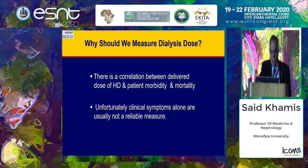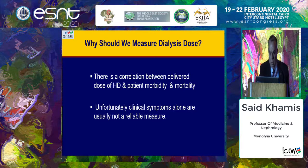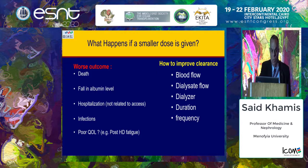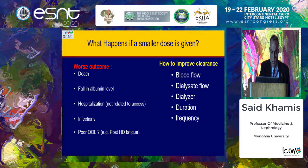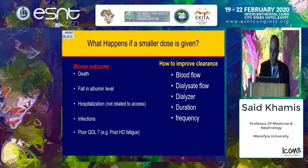Why should we measure the dialysis dose? There is evidence-based correlation between the delivered dose of hemodialysis and patient morbidity and mortality. But clinical symptoms and lab results alone are usually not a reliable measure. If a smaller dose is given, we face worse outcomes in the form of death, hospitalization, and poor quality of life like post-dialysis fatigue. Improvement can be achieved by manipulating blood flow, dialysate flow, dialyzer size, surface area, duration, and frequency.